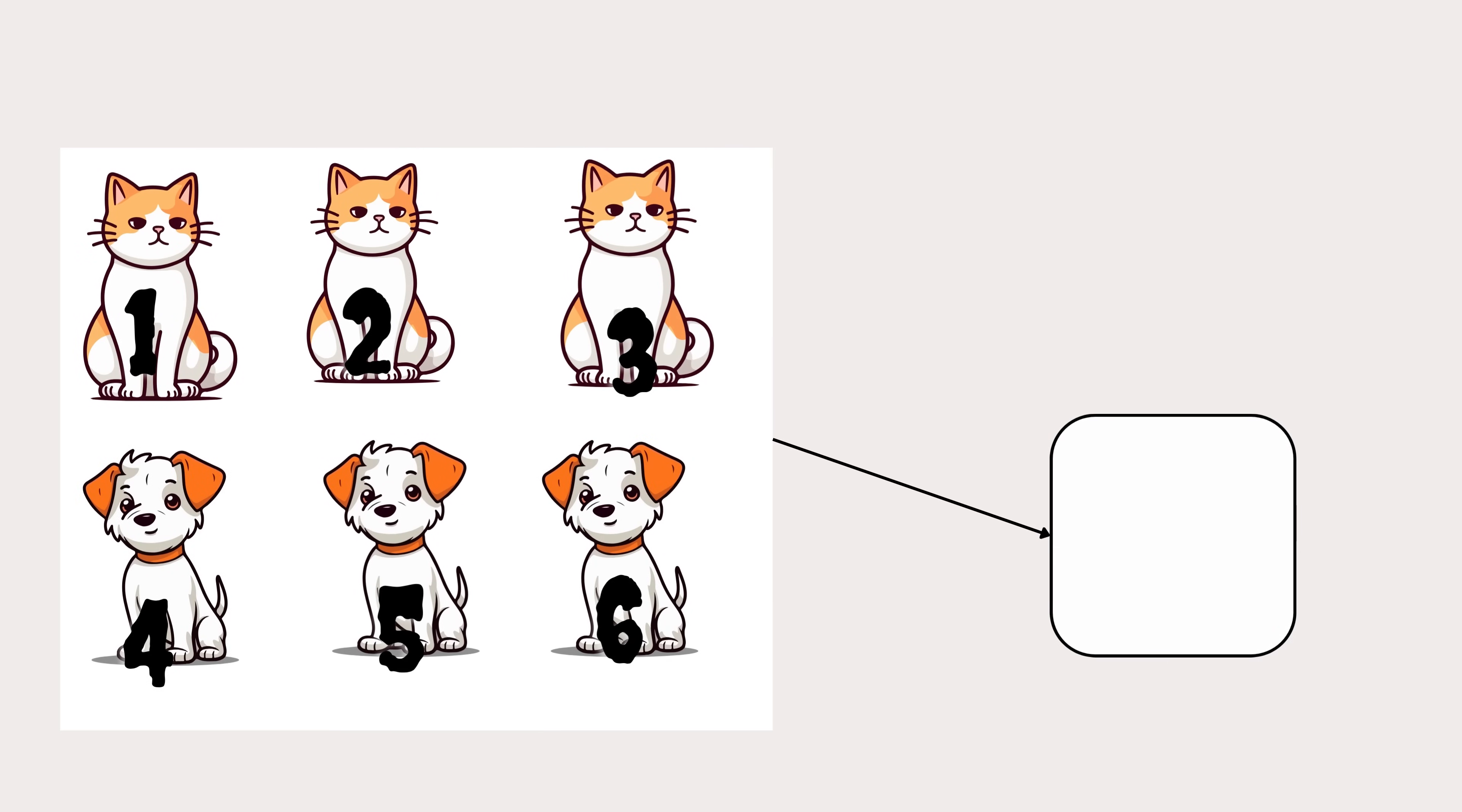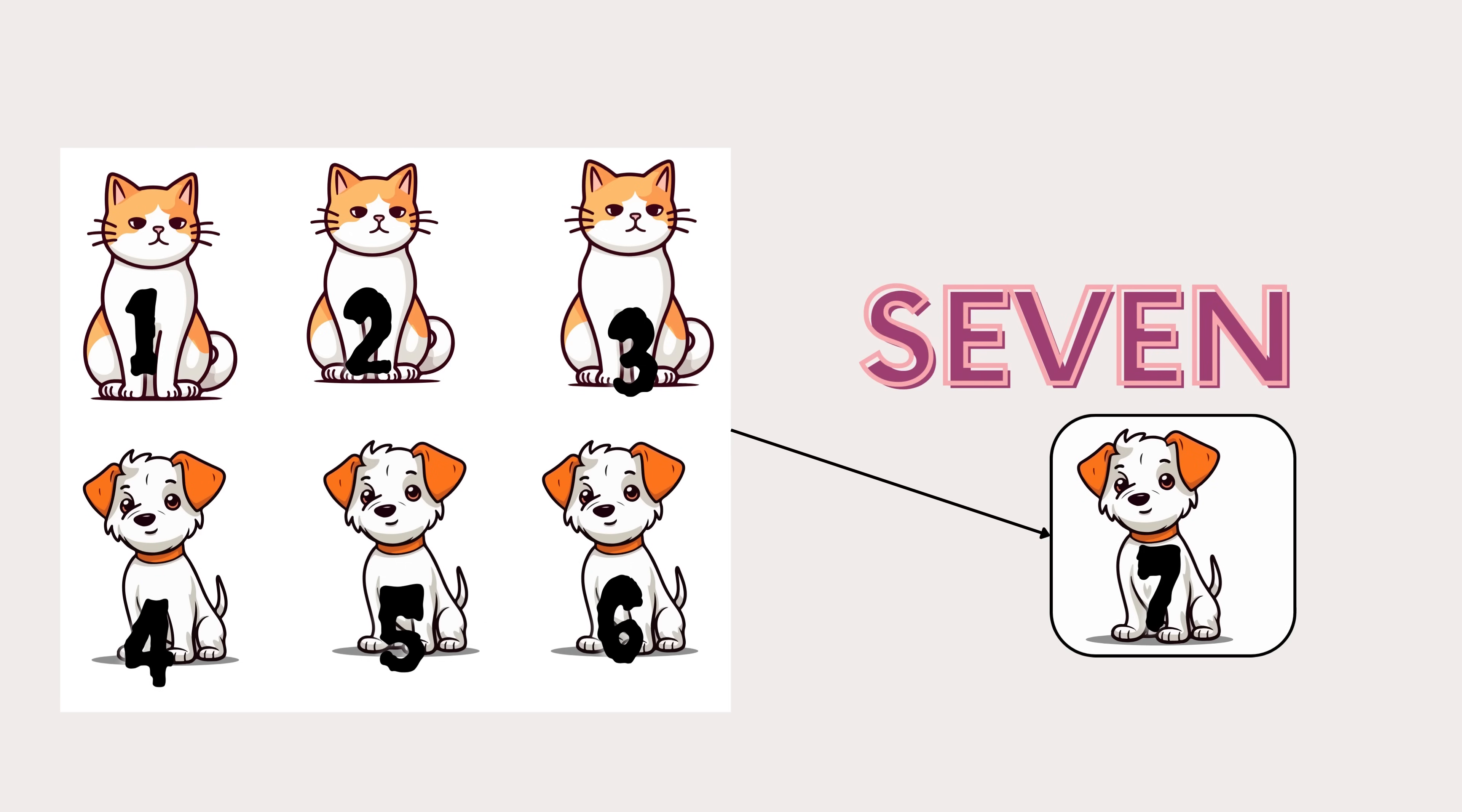Look, there are six animals in the box. Let's find out what happens when we add one more animal. Pause the video to count the animals. Look, we now have seven animals. Seven is one more than six.